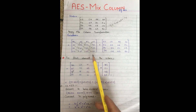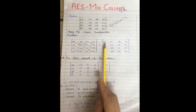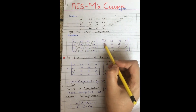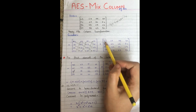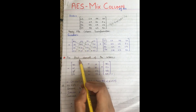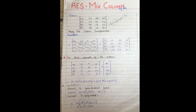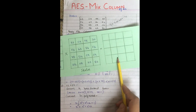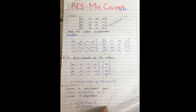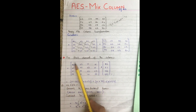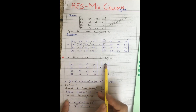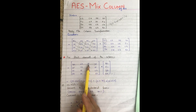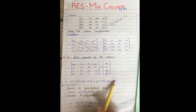For AES MixColumns, we will multiply these two matrices. For matrix multiplication, to transform the first element 63, we multiply the first row of the MixColumns matrix with the first column of the state matrix. So: 02 multiplied by 63, 03 multiplied by f2, 01 multiplied by 7d, and 01 multiplied by d4.